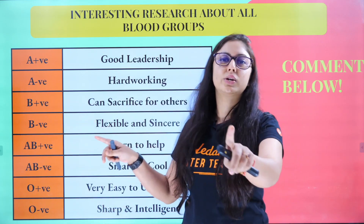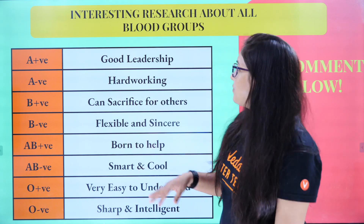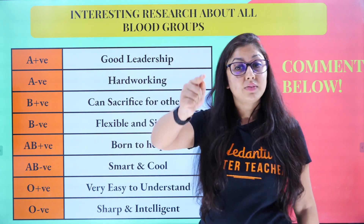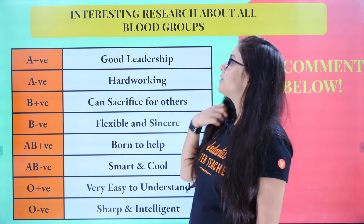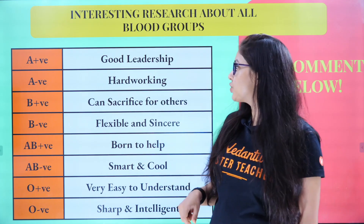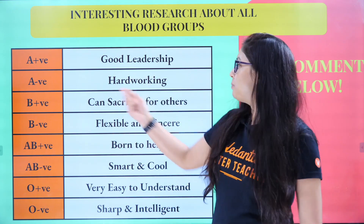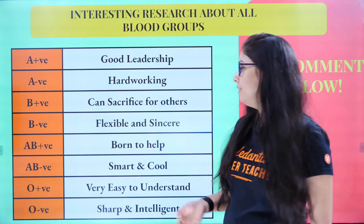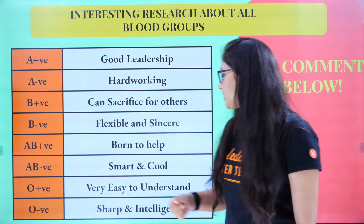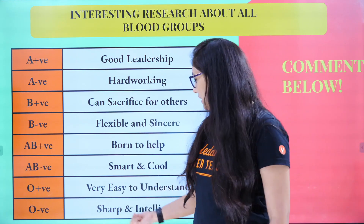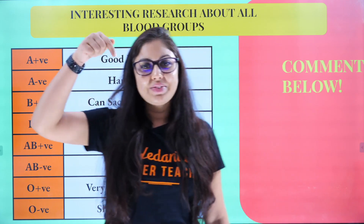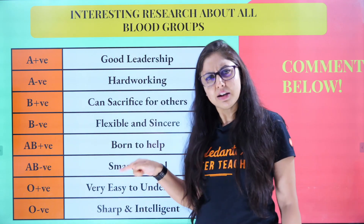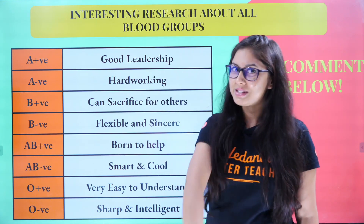Here is a fun fact — please note this is not scientifically proved, just for fun. Blood group personality traits: A positive — good leadership skills; A negative — hardworking; B positive — can sacrifice for others; B negative — flexible and sincere; AB positive — born to help; AB negative — smart and cool; O positive — easy to understand; O negative — sharp and intelligent. Comment below whether this matches your personality!